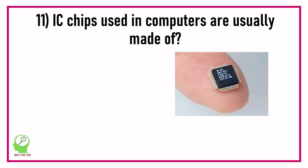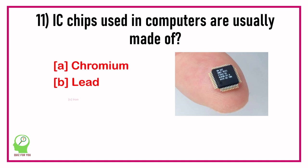Question number eleven: IC chips used in computers are usually made of which of the following? Options are: Chromium, Lead, Iron, Silicon.